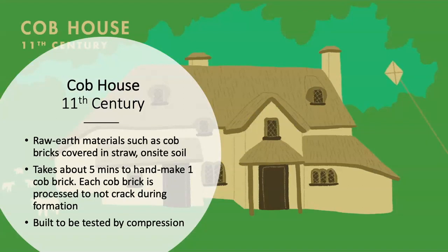Cob houses of the 11th century. These were made from raw earth materials such as cob, bricks covered in straw, and on-site soil. Instead of creating uniform blocks to build with, cob is normally applied by hand in large clumps — hence where the name cob was derived from, passed from person to person in the process of forming the building. Insulation is a strength, but the downfall is they would not be suitable for extreme heat, unlike adobes — though they can trap heat. The process of making cob bricks takes about five minutes to hand-make one brick, processed so it won't crack during formation and can withstand compression.